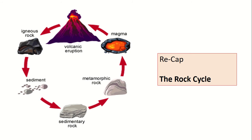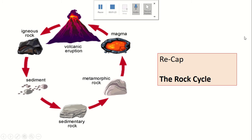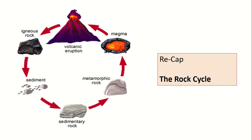Metamorphic rock is really, really hard rock. Igneous is quite hard as well and sedimentary is very, very soft. That's a really important factor to bear in mind as we go through this lesson. There are three different types of rocks — mainly igneous, sedimentary and metamorphic — and that will have an impact on what we're going to look at now, which is something called weathering.